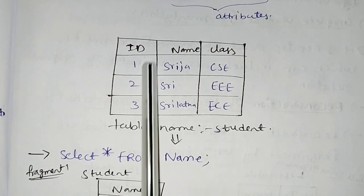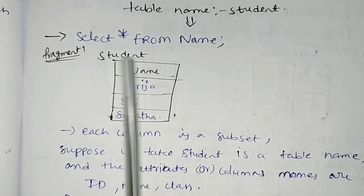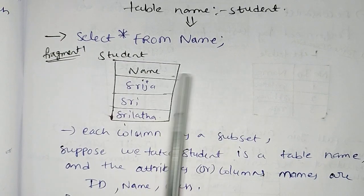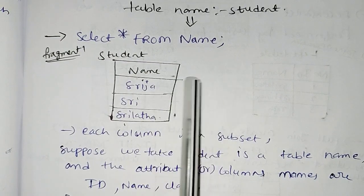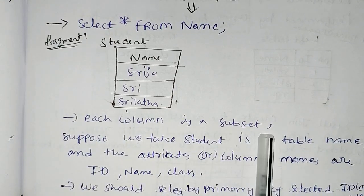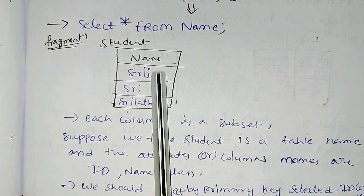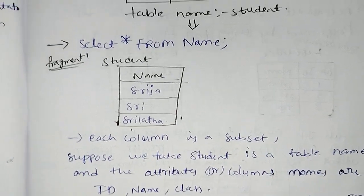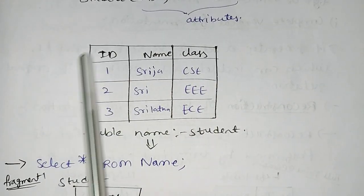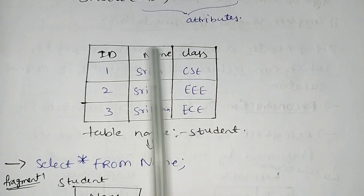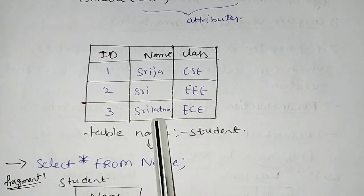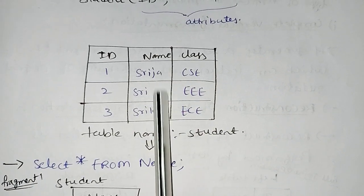This is the fragment here. Student is the table name; name is the attribute. Each column is a subset. So this is the main name — this is the sub-part, or child part, a subset.